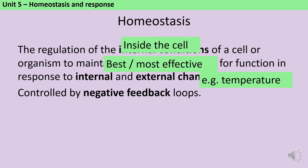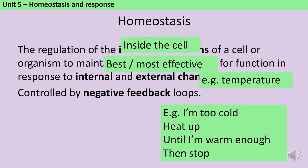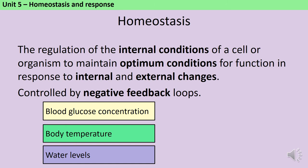Negative feedback loops are automatic systems that respond to changes in conditions without you having to think about it or do anything — your body is just constantly making adjustments. For example, if you're feeling too cold, that might not be a conscious thought, it's just something your brain can pick up on. Your body starts to do certain things to warm itself up until you reach the point where you're now warm enough, and then your body again notices that the conditions have become optimum and stops doing the things it was doing to warm you up.